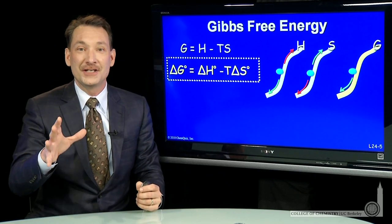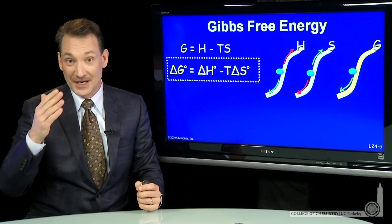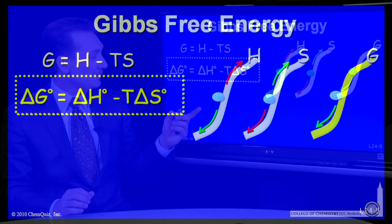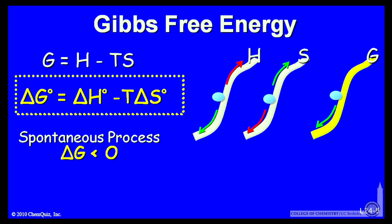If the free energy difference between products and reactants is negative, then I go towards products. Now, I can summarize that and say that for spontaneous processes, processes that are favored, the free energy difference is less than zero.